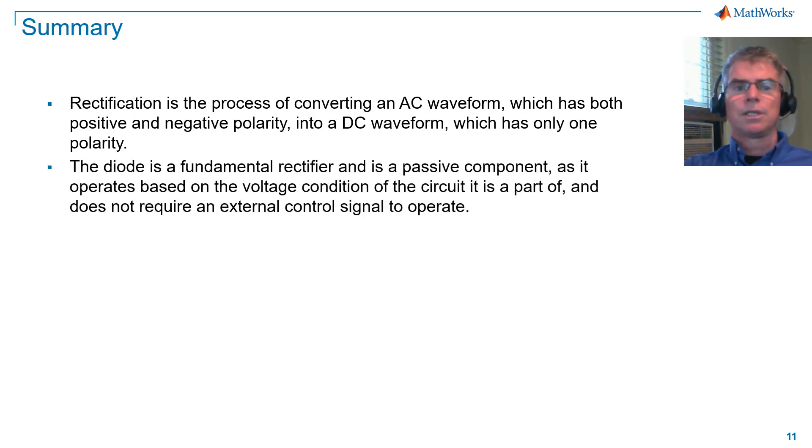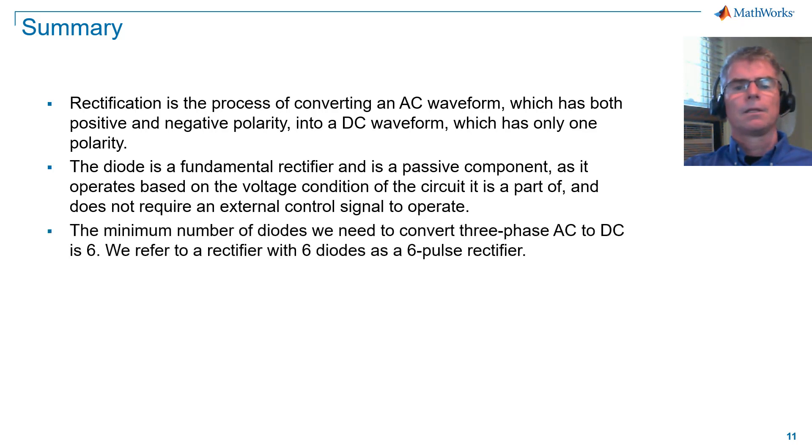The diode is a fundamental rectifier and is a passive component, as it operates based on the voltage condition of the circuit it's a part of, and does not require an external control signal to operate. The minimum number of diodes we need to convert three-phase AC to DC is 6. We refer to a rectifier with 6 diodes as a 6-pulse rectifier.